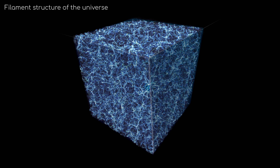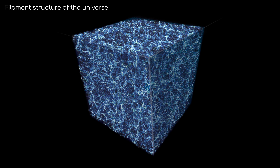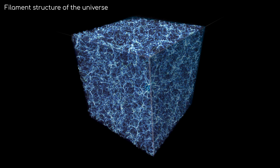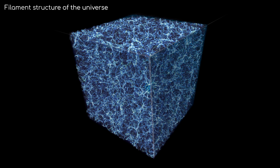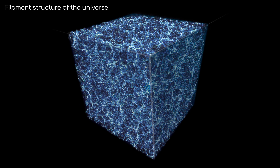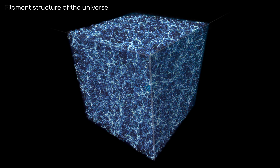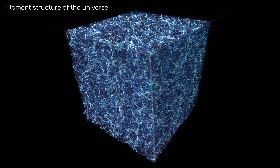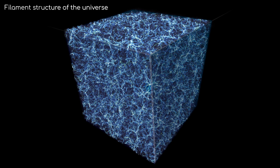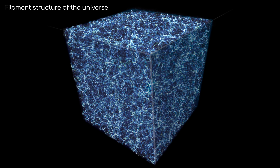So, there you have it. That's what Boötes' Void really is: a very empty patch of space, hundreds of millions of light years across, containing some very lonely galaxies.